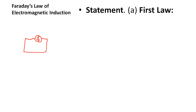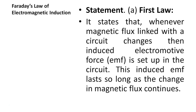Suppose we have a magnet and we move it towards the circuit — the galvanometer will show deflection due to the induced EMF. When the magnet moves, magnetic flux is linked with the circuit and changes, causing an induced EMF. This induced EMF lasts as long as the change in magnetic flux continues. If the magnet moves continuously there will be induced EMF; whenever it stops, the EMF will stop.